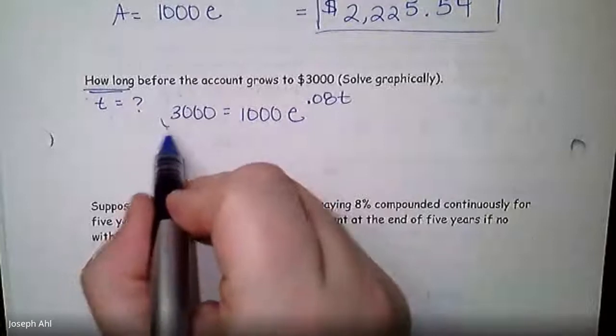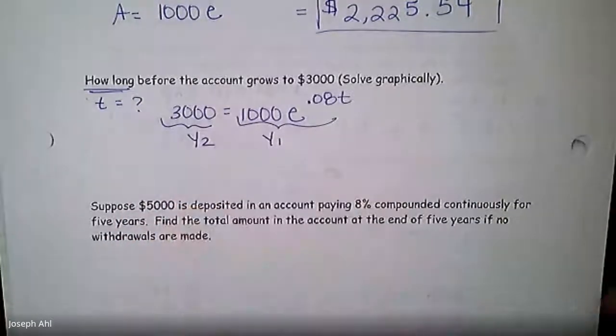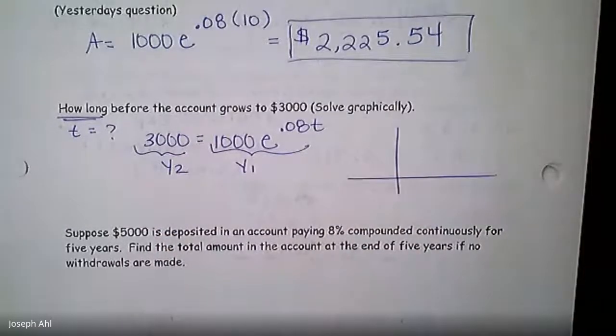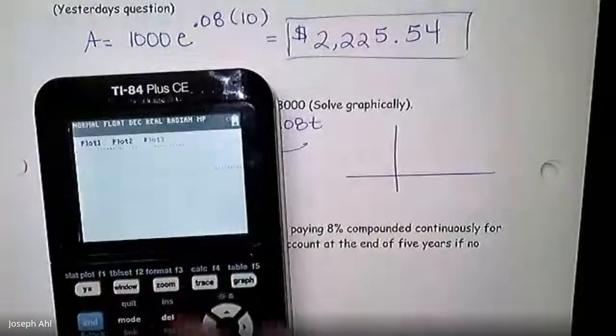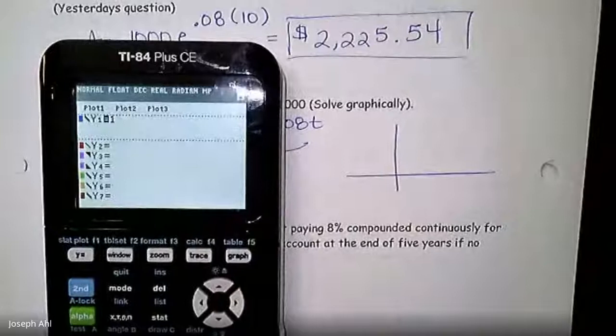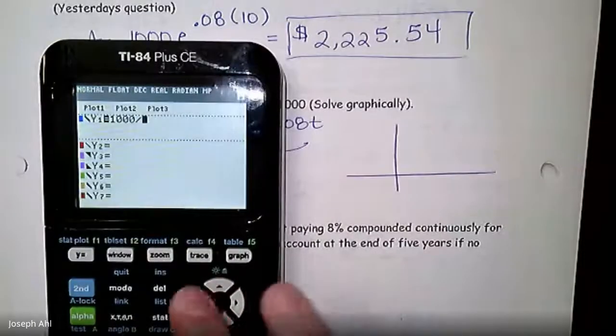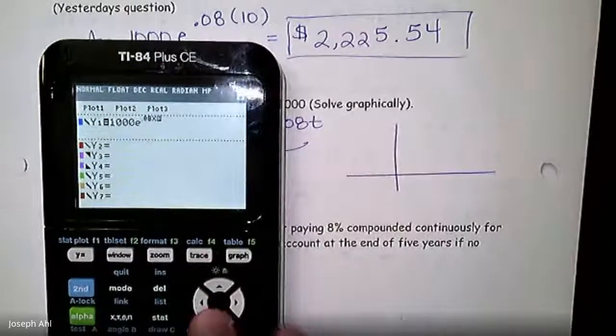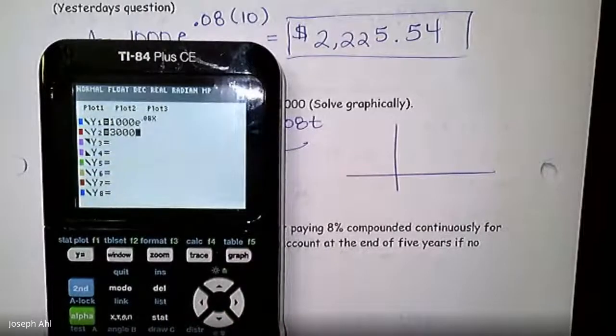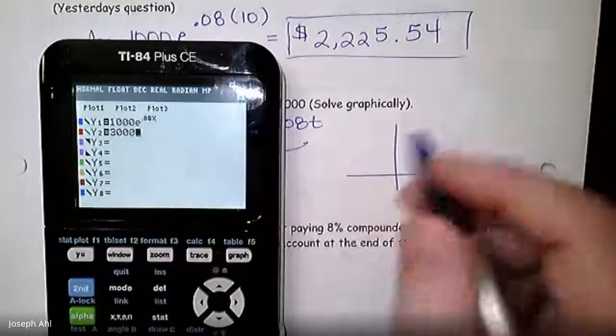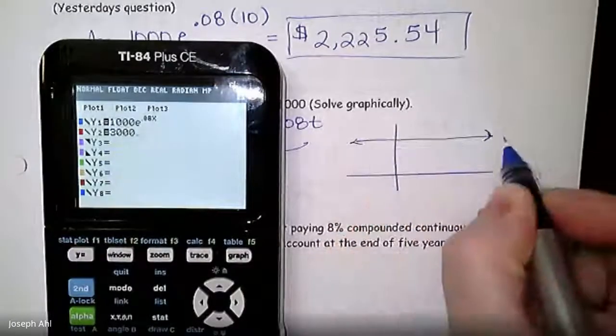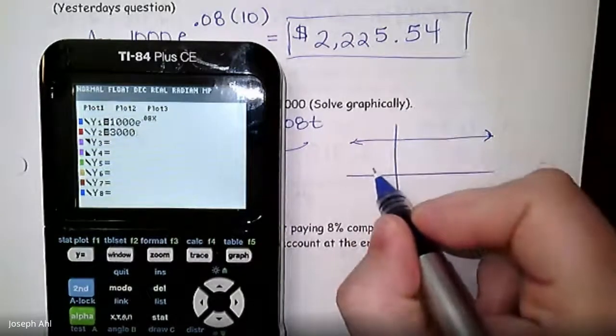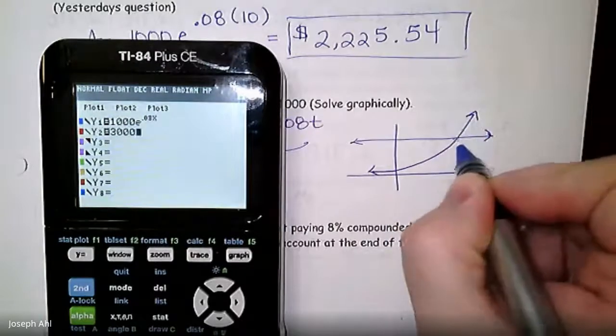The second division sign is that e again, e^(0.08 times 10) is $2,225.54. So $2,225.54. Not bad for not doing anything to the money. More than doubles in 10 years. How long before the account grows to $3,000? Solve graphically. There will be ways in this course that we learn how to do this algebraically at some point, but for now, the easiest way for us to accomplish this is to figure out how much time, so how long would be what's t when the amount in the account is 3,000.